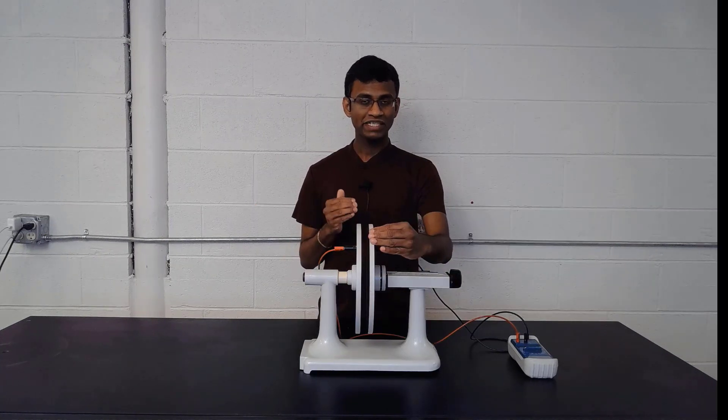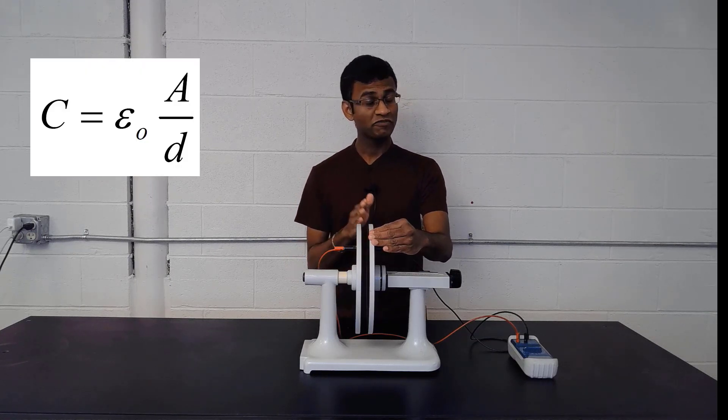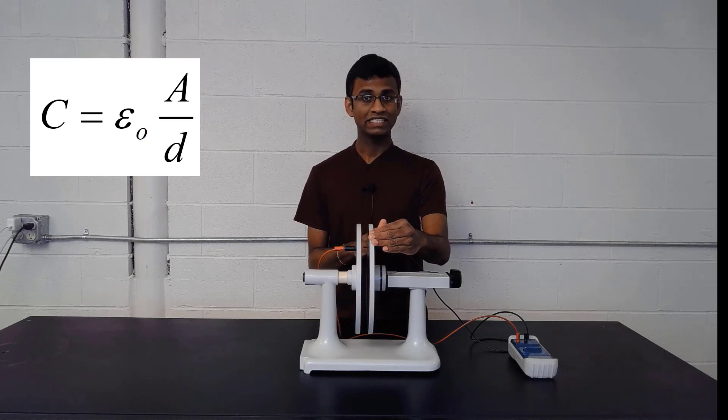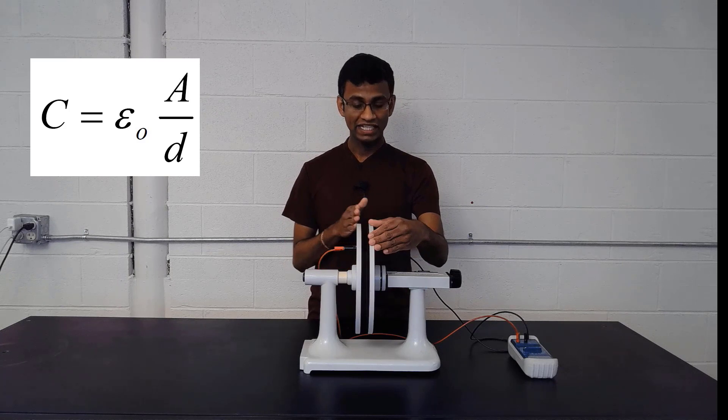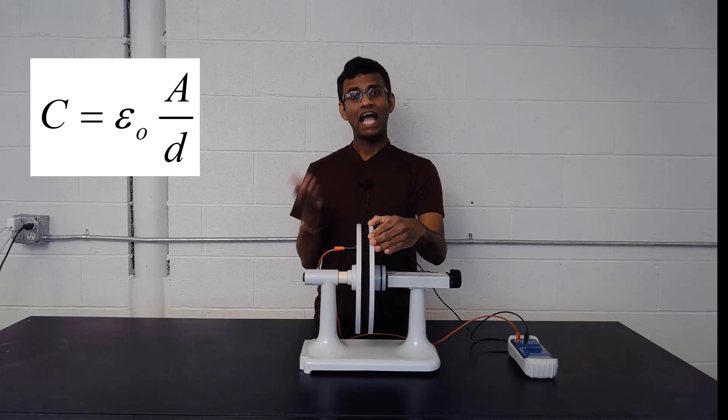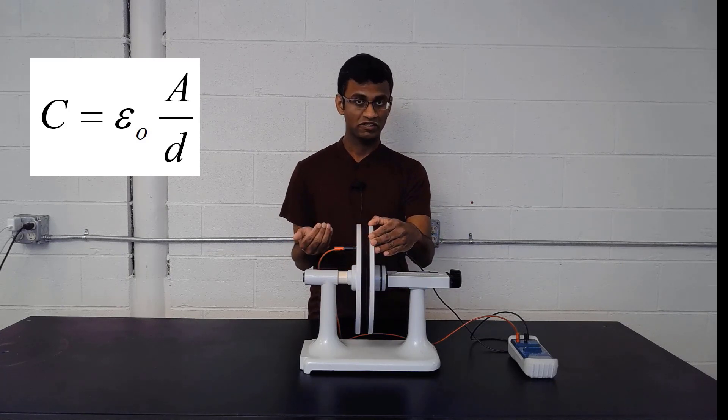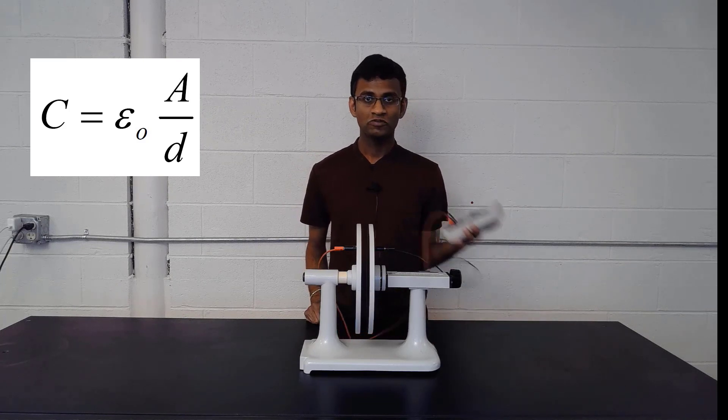For parallel plate capacitor, there is another equation for the capacitance. The capacitance of the parallel plate capacitor is related to the area of one parallel plate, and the distance between two plates, and the permittivity constant of air. Here we have capacitance meter.